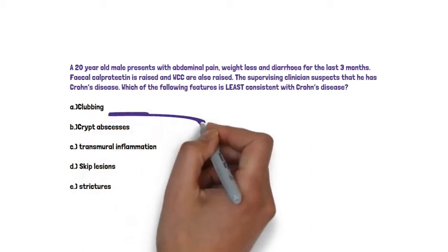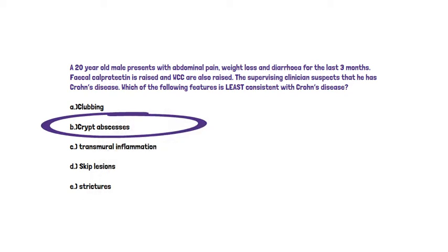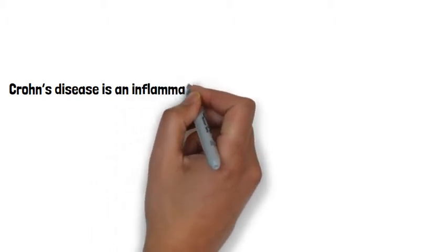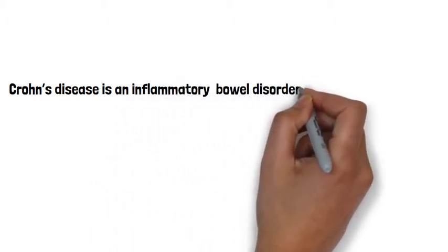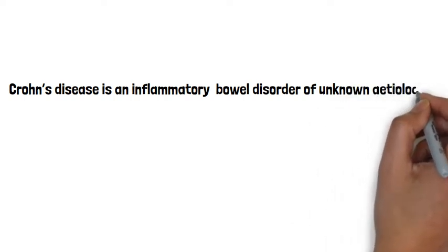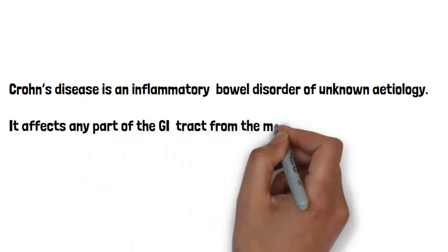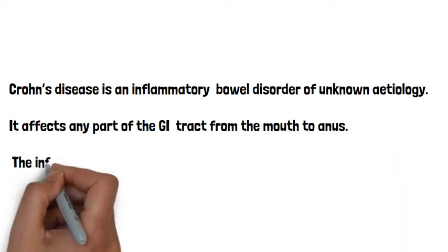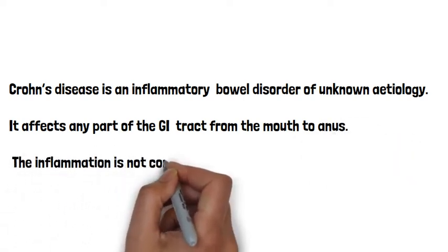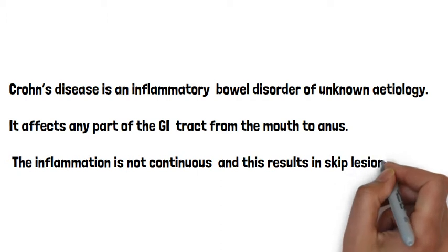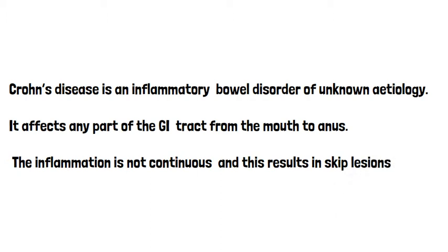So the answer is B. Crypt abscesses. This question concerns Crohn's disease, which is a really common exam question, and students often get confused about the difference between Crohn's disease and ulcerative colitis. Crohn's disease is an inflammatory bowel disorder of unknown aetiology, and it can affect any part of the GI tract from the mouth to the anus. This inflammation is not continuous and you get what we call skip lesions.